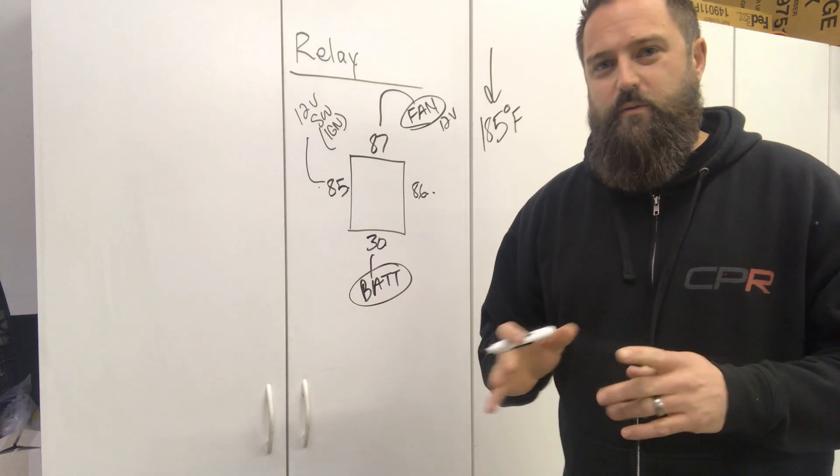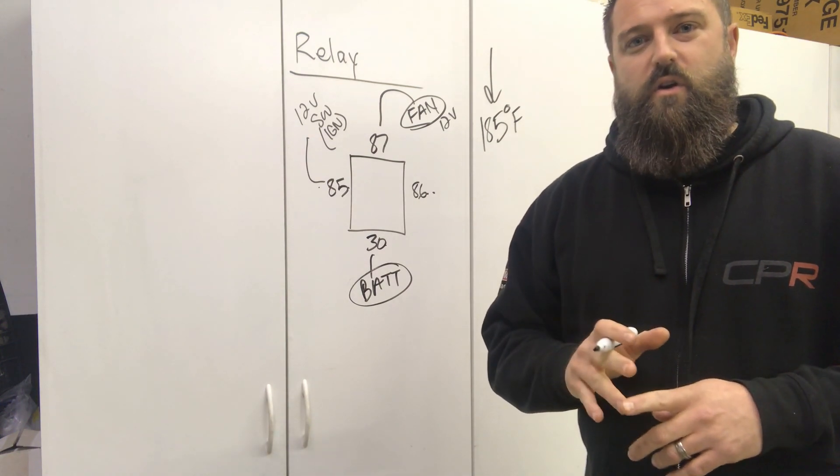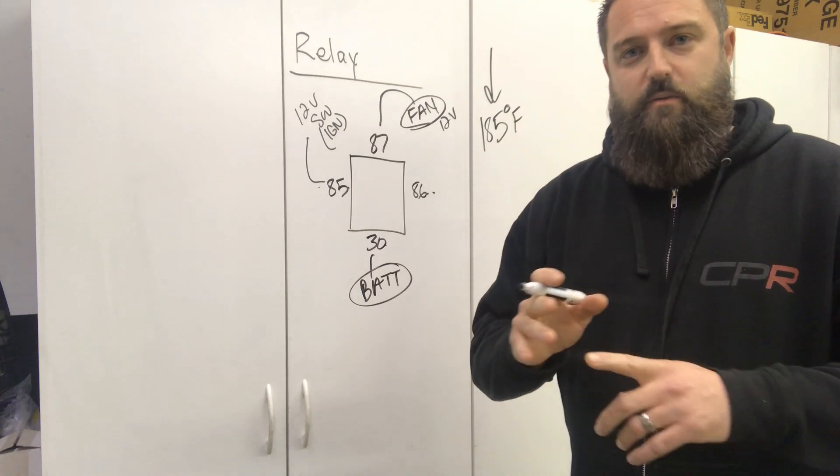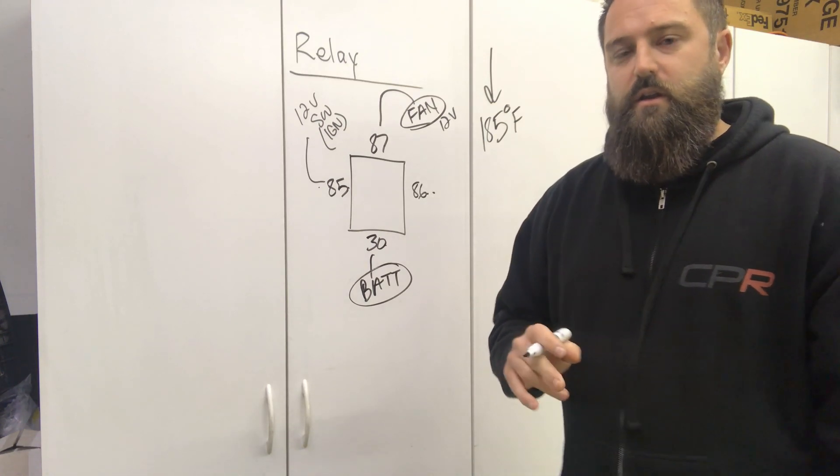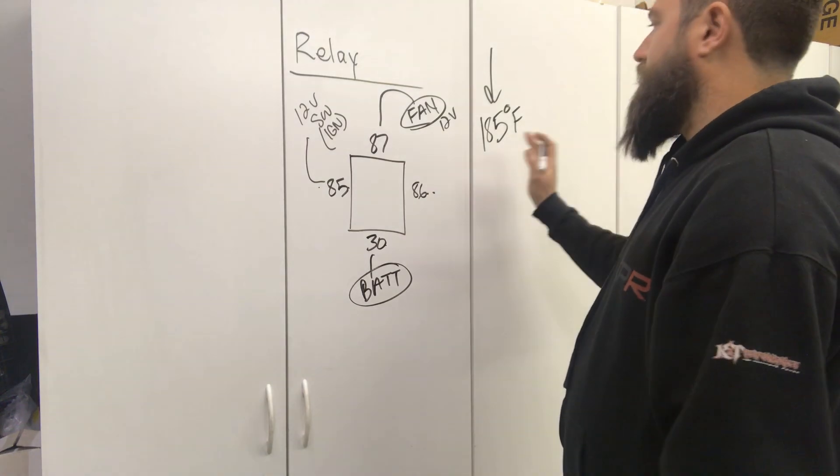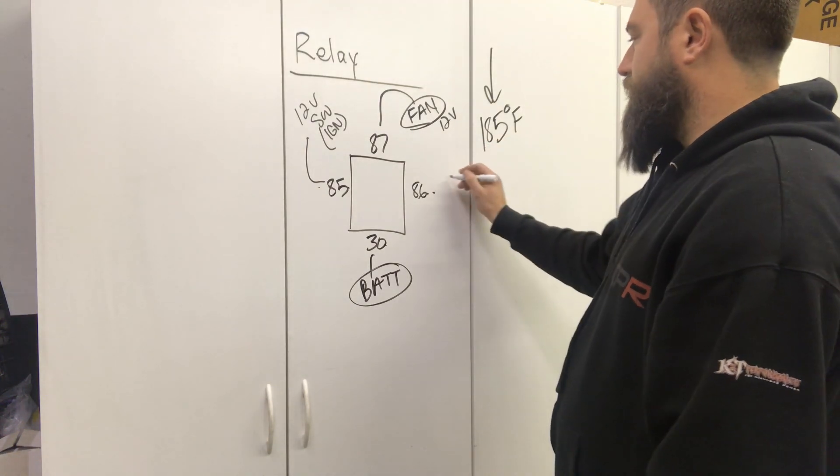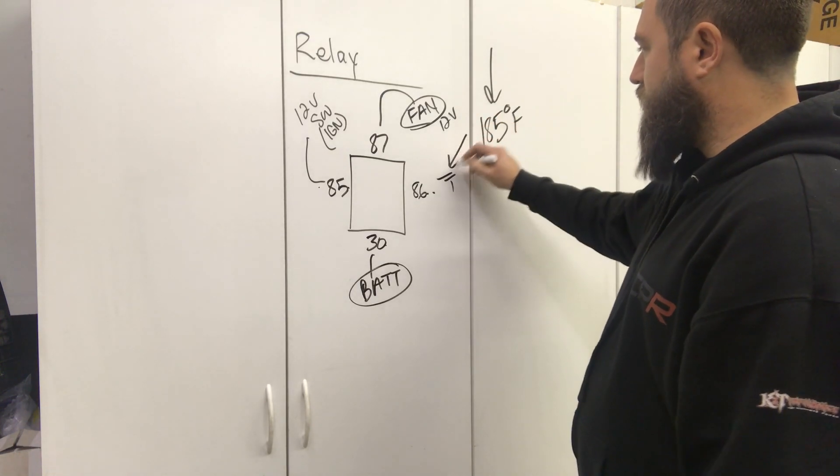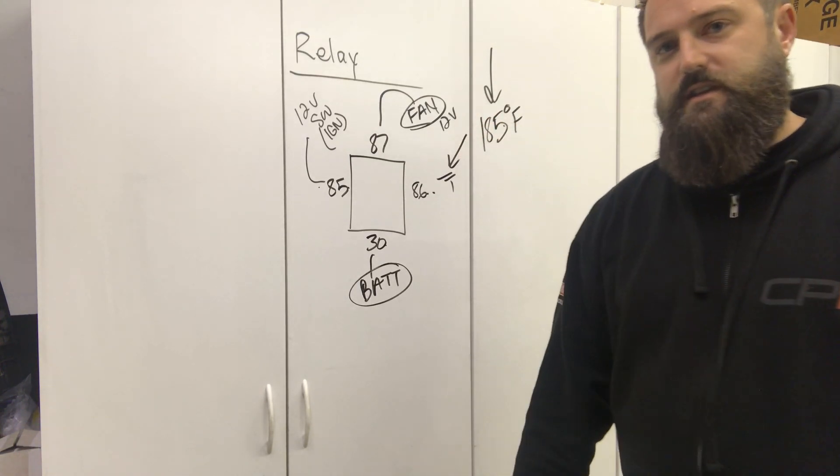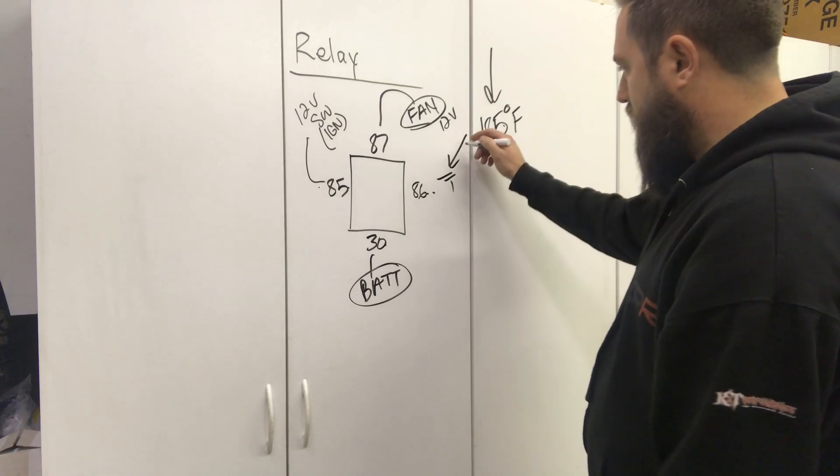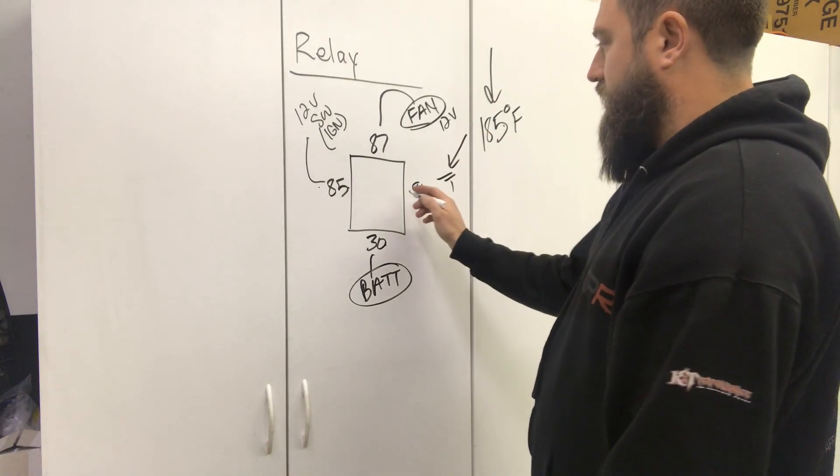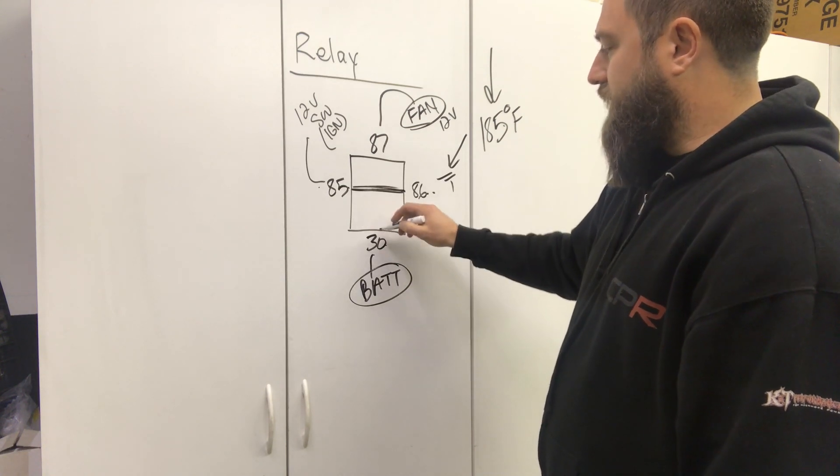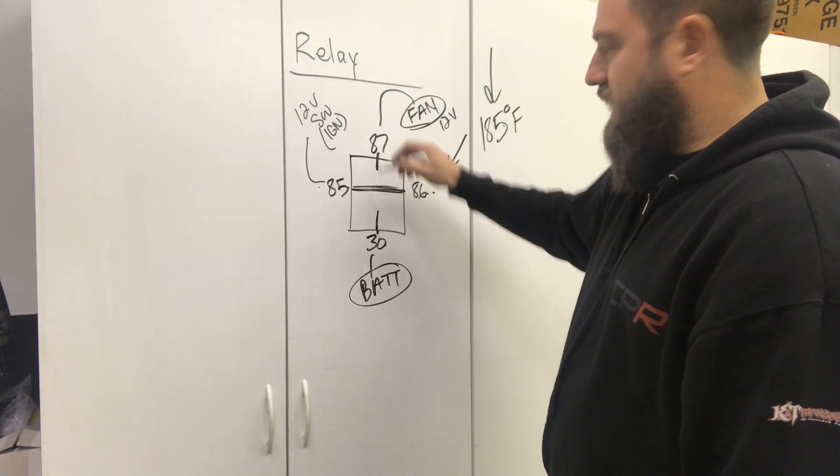Depending on the output, whether it's a half bridge or an injection spare low side output, injector output, or ignition output, they generally send out ground. We're going to have ground on this side of the equation. But it's not available until the software sees the coolant temp at 185. It's going to send the ground out, and this coil is going to activate and provide continuity between 30 and 87.